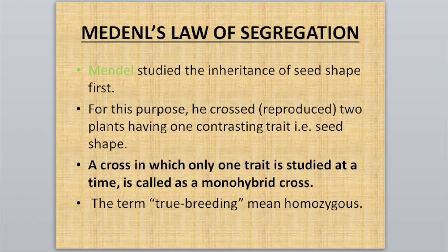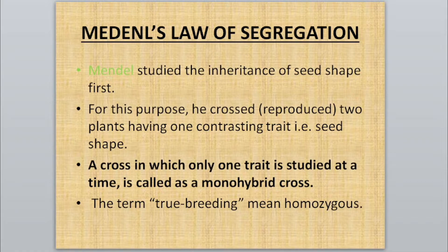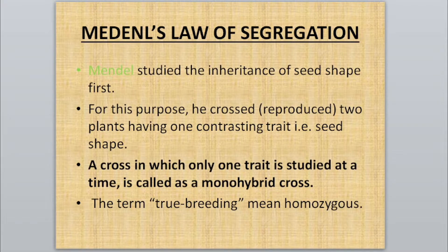Mendel selected the pea plant because it had seven different contrasting traits, and four important features. The organism should have a number of different traits that can be studied at the same time. The organism should have contrasting traits — like tallness and dwarfness, and round and wrinkled seed shape. The organism should be capable of self-fertilization and cross-fertilization, and should have a short, fast life cycle.